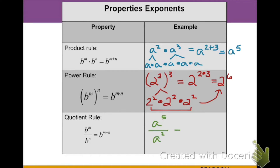Our next property is the quotient rule. With multiplication we added the exponents; with division we subtract them. For example, a to the fifth divided by a squared — the numerator has five a's, the denominator has two a's. Crossing out the common ones leaves three a's, which is the same as 5 minus 2, giving us a to the third power.